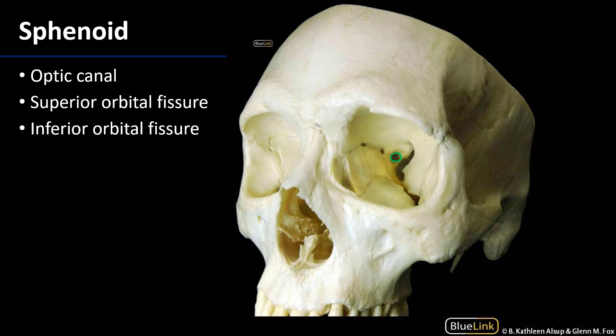We also have the superior orbital fissure and the inferior orbital fissure. The superior orbital fissure is a passageway between the orbit and the middle cranial fossa. It is a means of conveyance for cranial nerve 3 (the oculomotor nerve), cranial nerve 4 (the trochlear nerve), V1 and its branches — the ophthalmic division of the trigeminal nerve (cranial nerve 5). It will also convey the abducens (cranial nerve 6), and the superior and sometimes branches of the inferior ophthalmic veins back to the cavernous sinus.